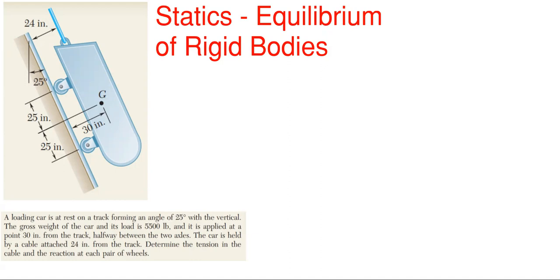So the topic of this video is statics equilibrium of rigid bodies and we're going to be finding reactions. We have this loading car at rest on a track forming a 25 degree angle with the vertical. The weight of this car is 5.5 kips or 5,500 pounds and it's applied here at point g with a distance shown away from the track. The car is held by a cable attached 24 inches from the track, and we need to determine the tension in the cable and the reaction at the pair of wheels that contact the track.